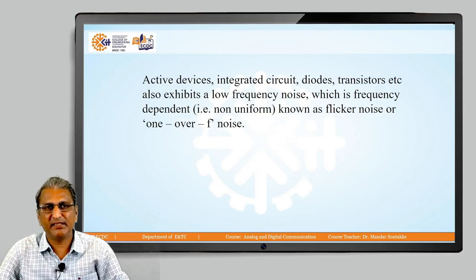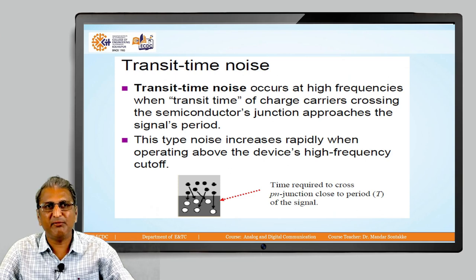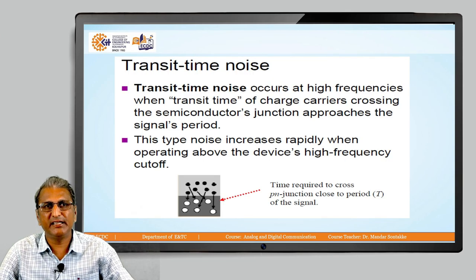In the previous lecture, we discussed thermal noise as well as shot noise. The next type of internal noise is transit time noise.